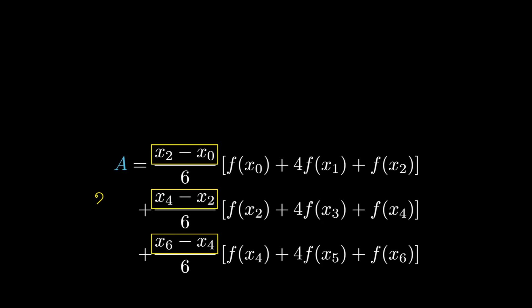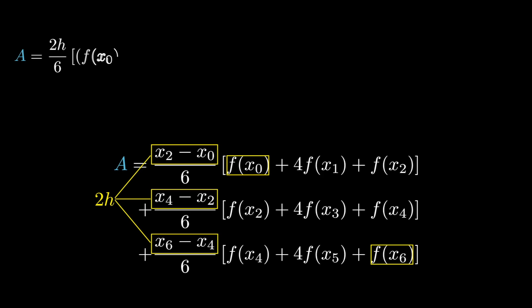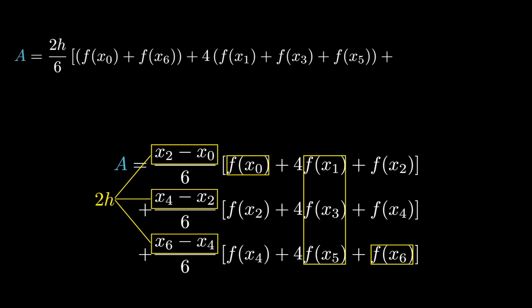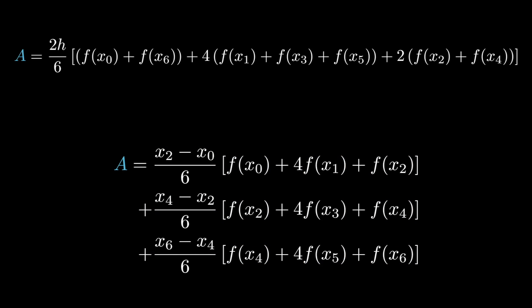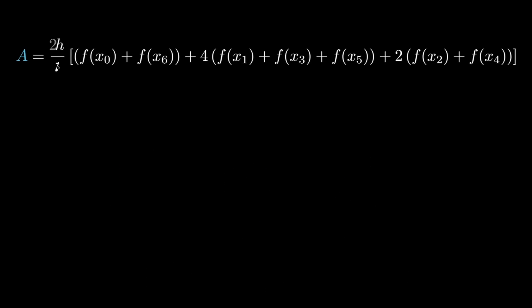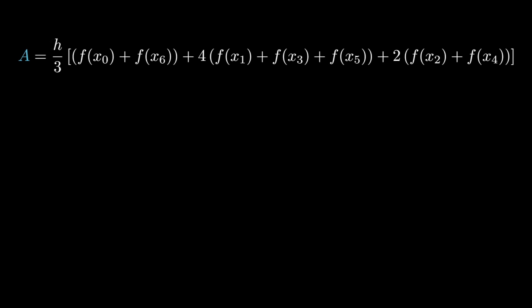Since the difference between limits in each interval is 2h, we can take 2h/6 as a common factor. f(x0) and f(x6) appear only once, so we keep them separate. The terms f(x1), f(x3), and f(x5) each have a coefficient of 4, so we factor out 4. The terms f(x2) and f(x4) appear in pairs with coefficient 2. Simplifying 2h/6 gives h/3, yielding the Simpson's one-third rule formula for 7 samples.